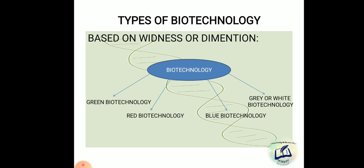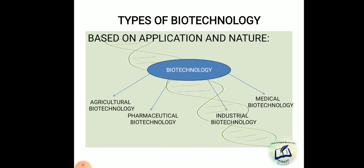Blue biotechnology is the revolution of aquaculture — the lives of aquaculture. Transgenic fish is an example of blue biotechnology. Grey biotechnology deals with industry — food industry, medical industry, and every type of industry. The role of biotechnology in industries is grey biotechnology.